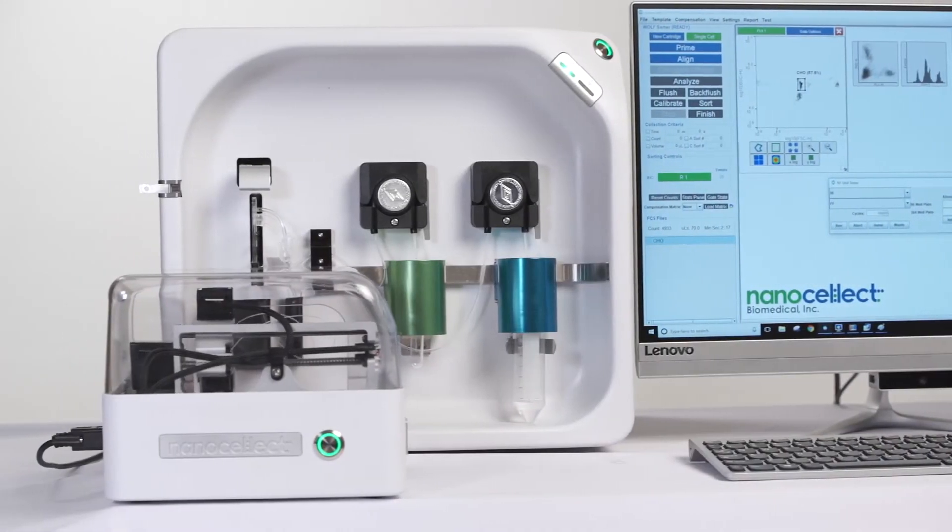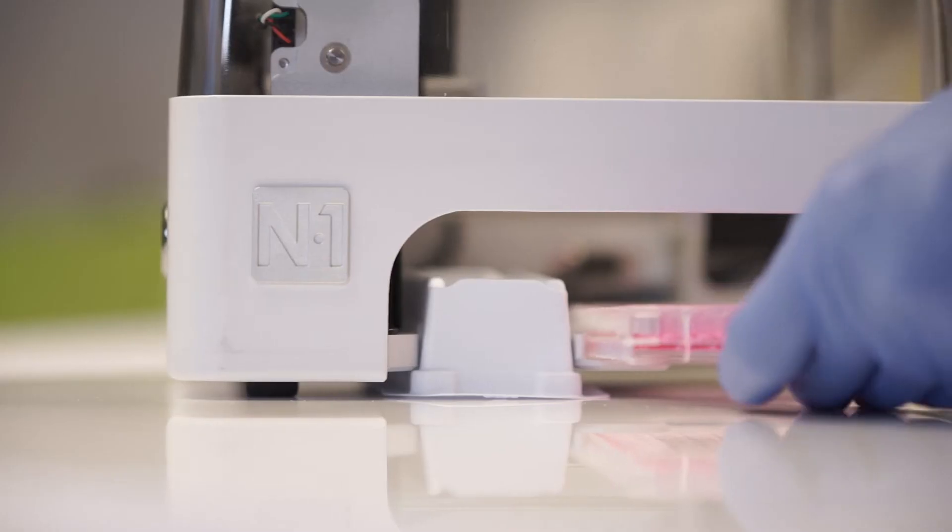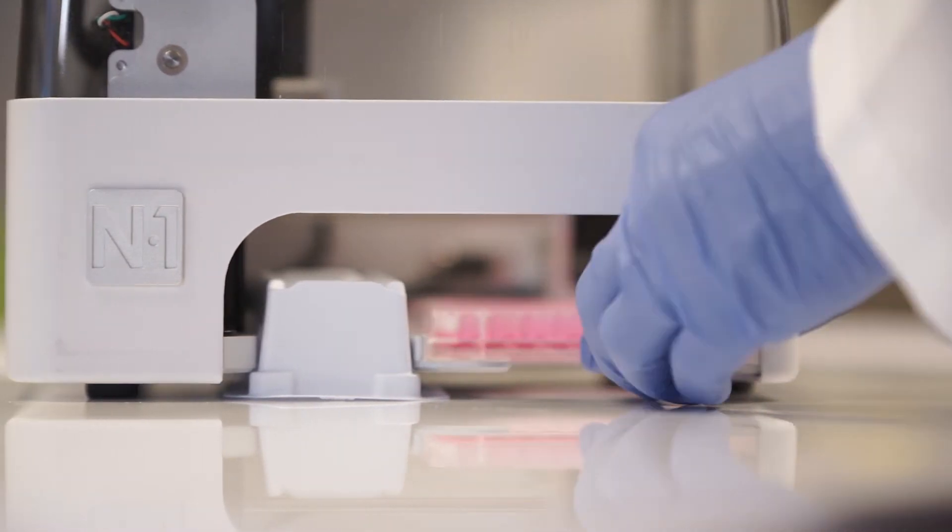The entire fluid path, the cartridge, and the dispenser tubing is disposable, so you can have rapid changeover between sample types.